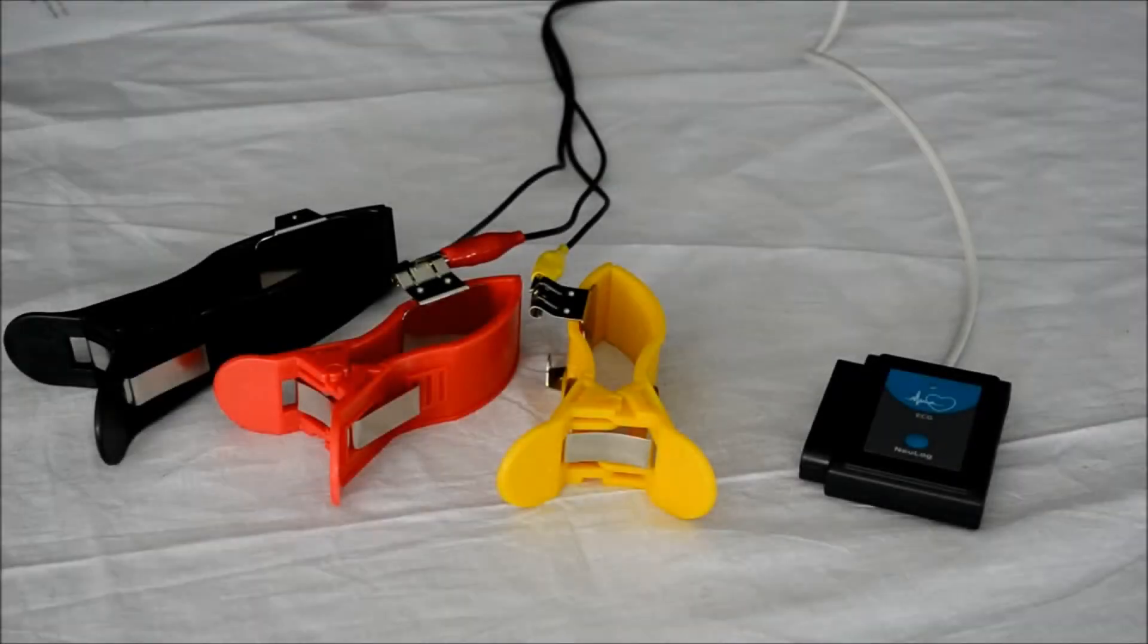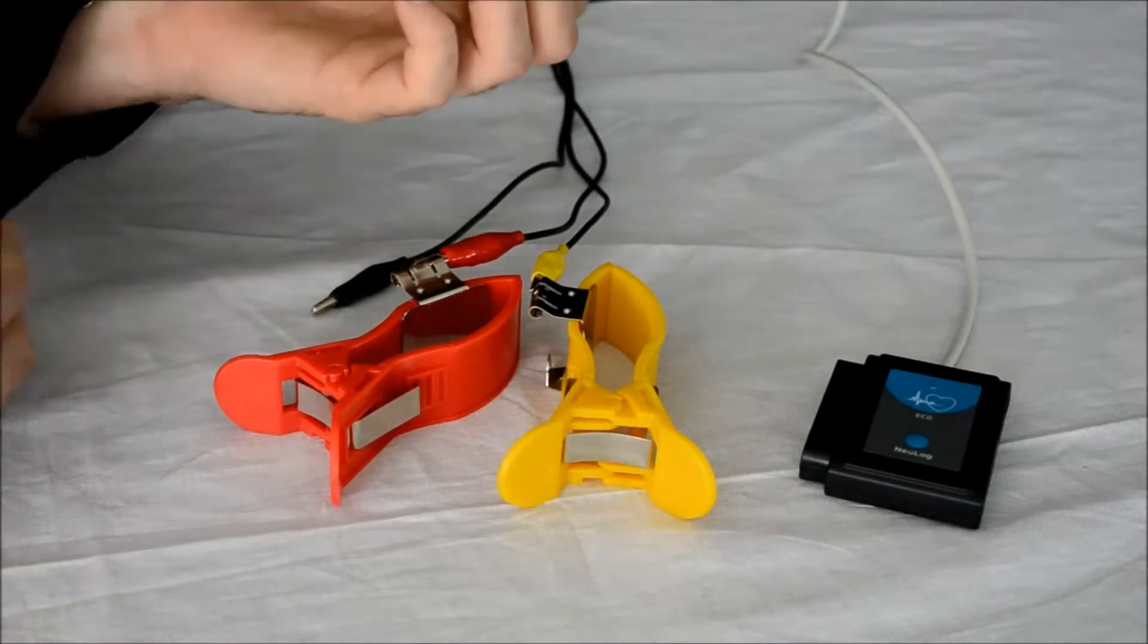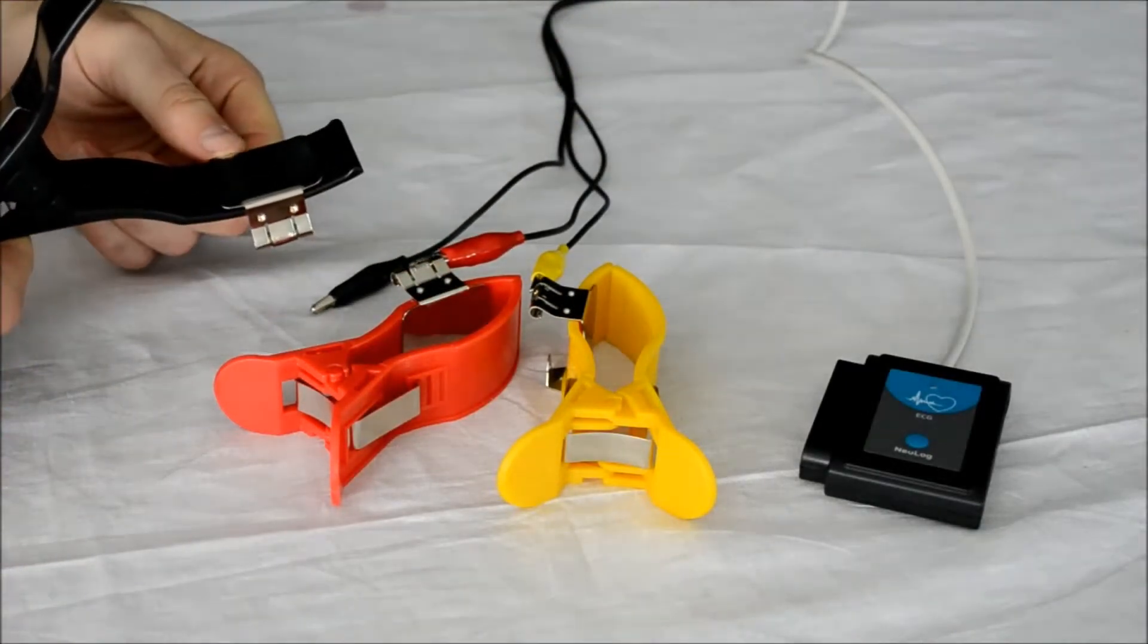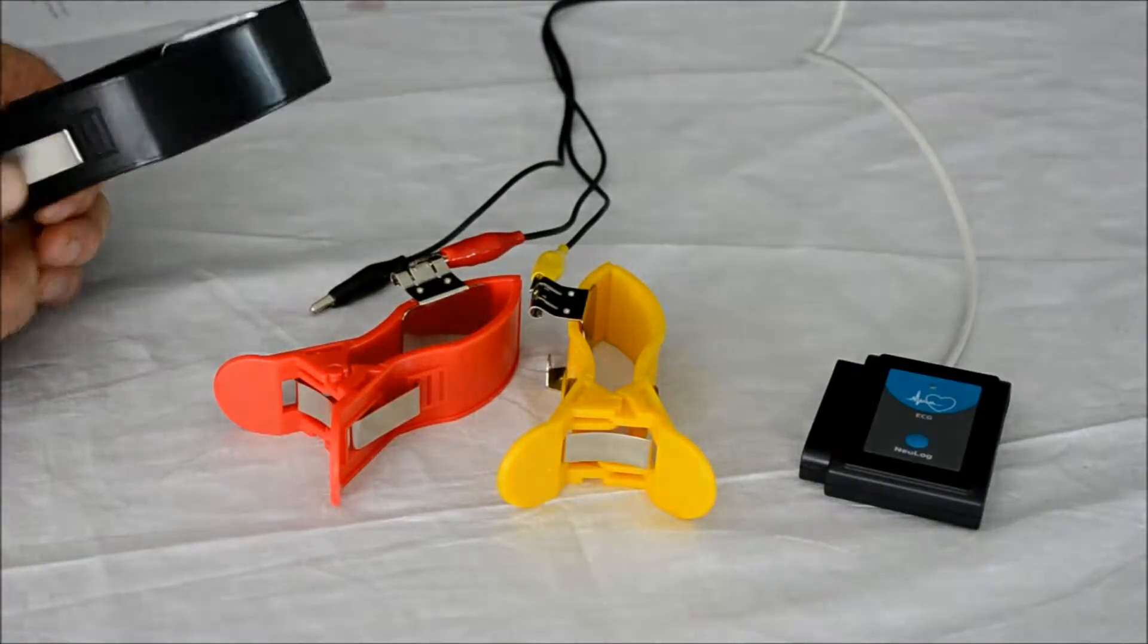The NeuLog electrocardiogram sensor comes with these three reusable clips that connect directly to your arms or legs. On the inside of each clip is a metal plate that is very sensitive to minor fluctuations in electrical conductivity.